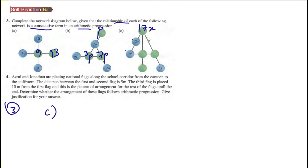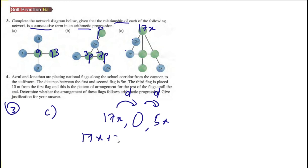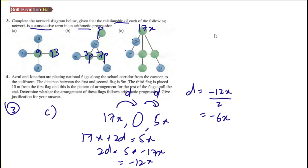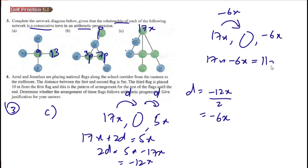We have 17x, a box, and 5x. The two gaps are both d, so 17x plus 2d equals 5x, giving 2d equals 5x minus 17x equals negative 12x, so d equals negative 6x. Therefore 17x plus negative 6x equals 11x, and the box is 11x.